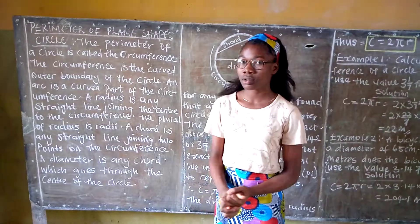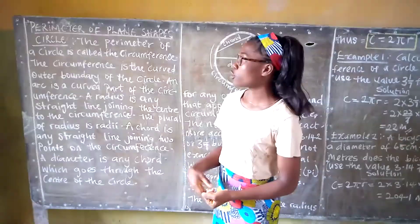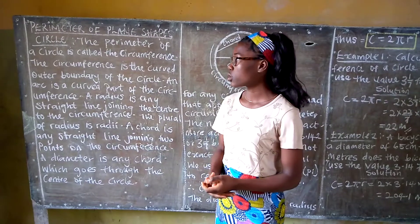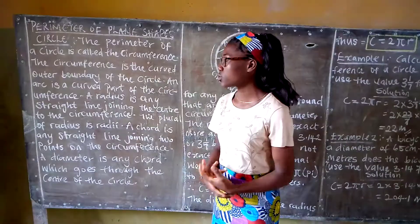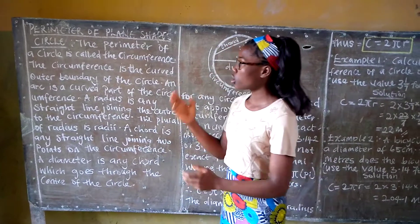Good day viewers. We are still dealing with perimeter of plane shapes. In our previous class we talked about rectangles and squares. Today we will be talking about the circle.